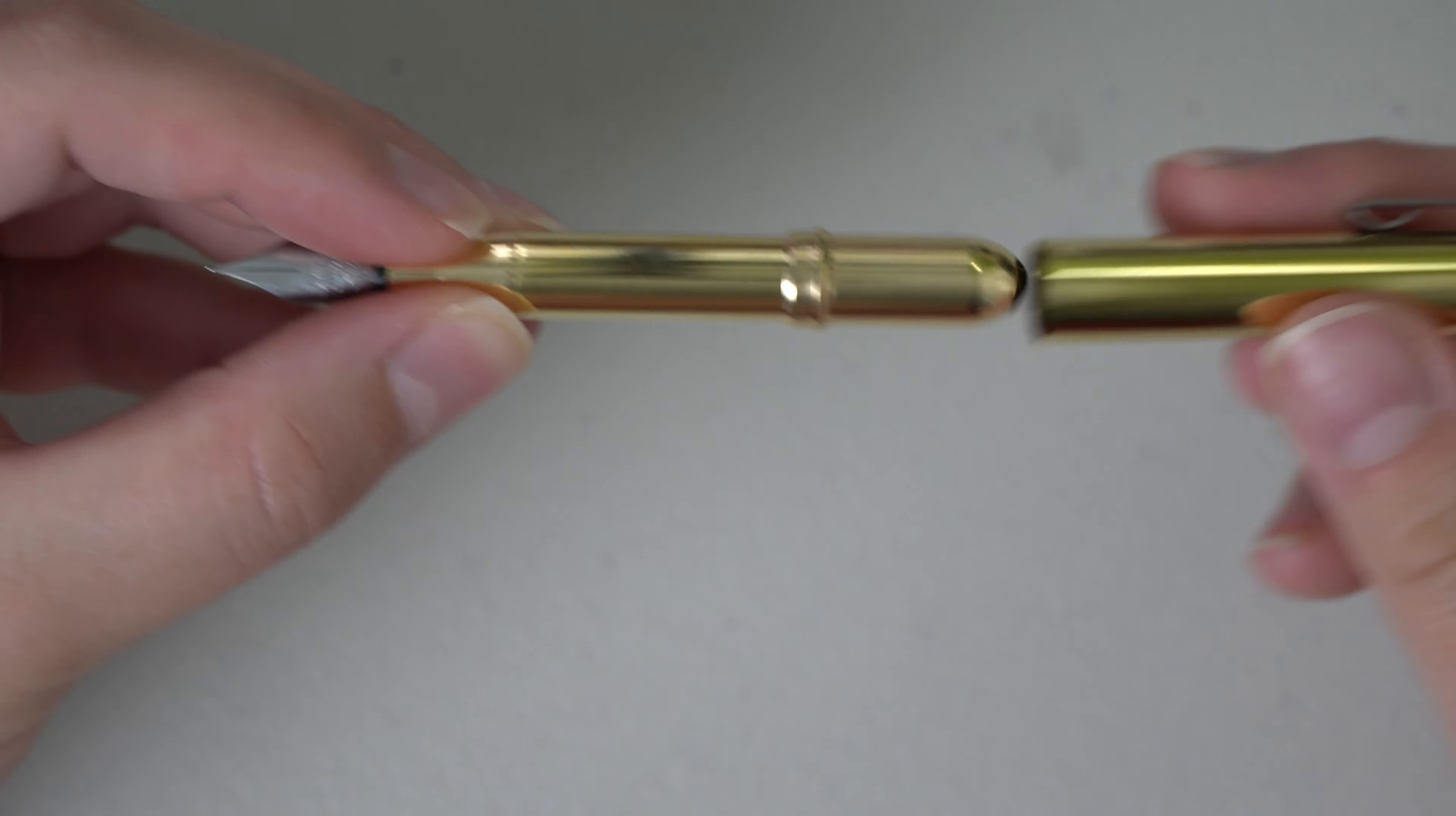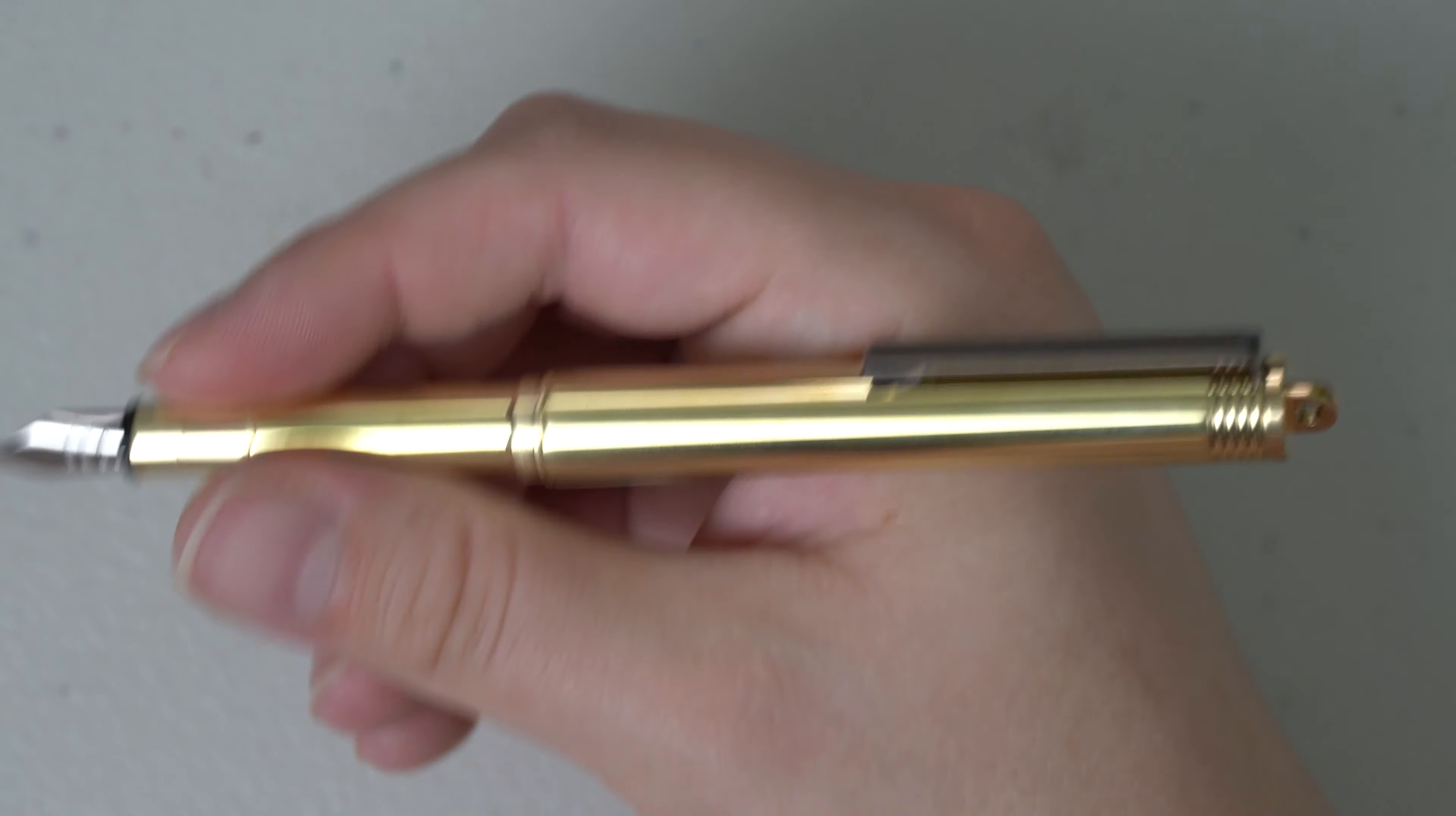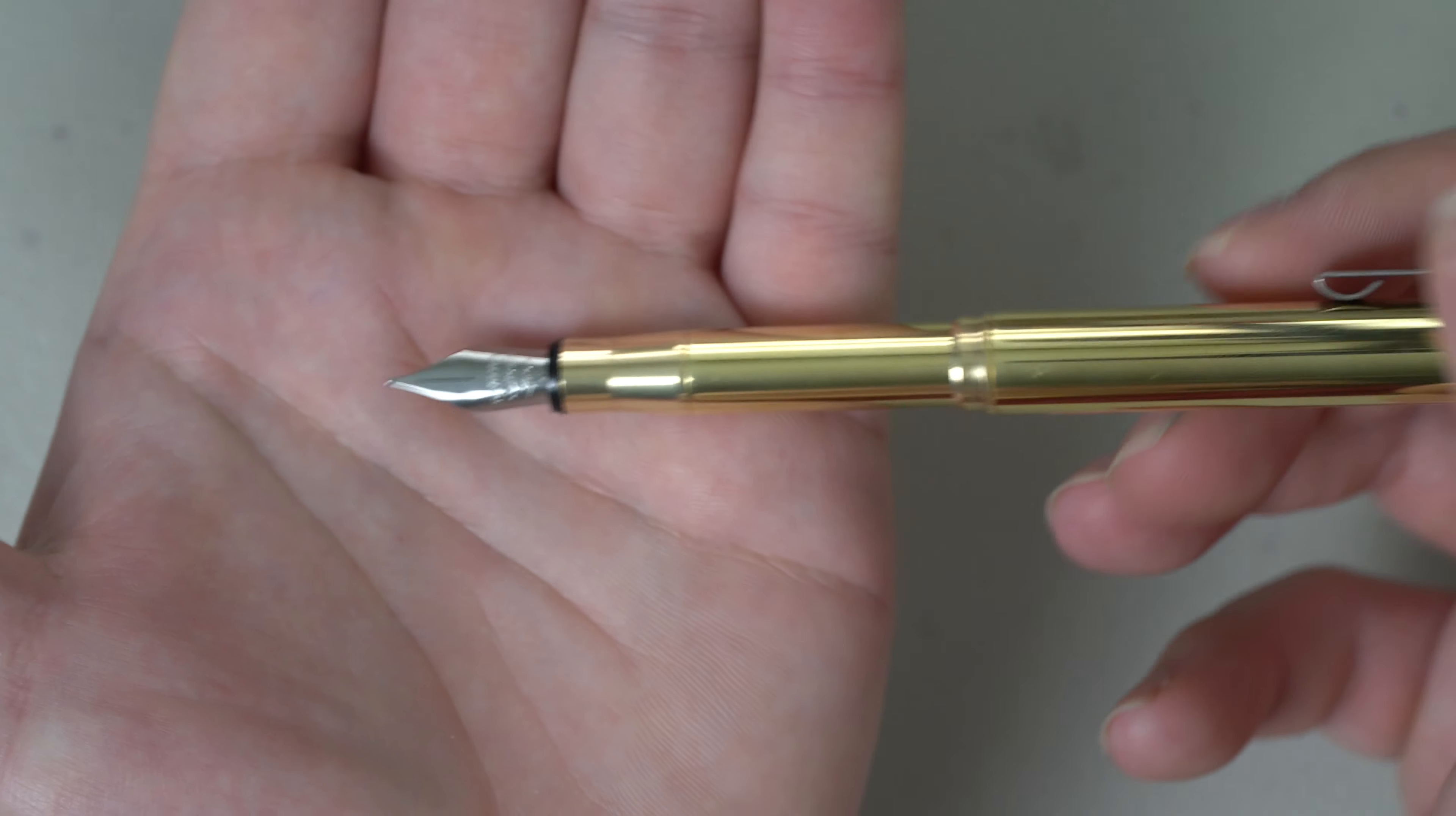And then to write with it, you would post it so it would be a comfortable size. And this is actually really nice. It is slightly heavy, so your hand might get tired if you're writing for a long time with this, but I really do like the feel of just the whole body being copper. That's really nice. It does have a steel fine nib. Fine is the only option. You don't get a choice. It is just how it comes.